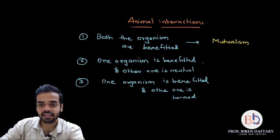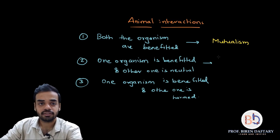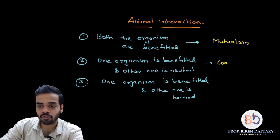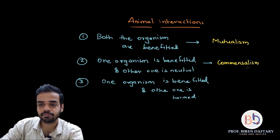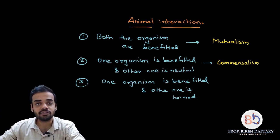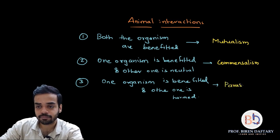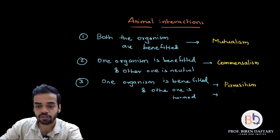The second type of interaction, in which one organism is benefited and the other one is neutral, is called commensalism. Under the third category there are two different types: the first one is parasitism, and the other one is predation.